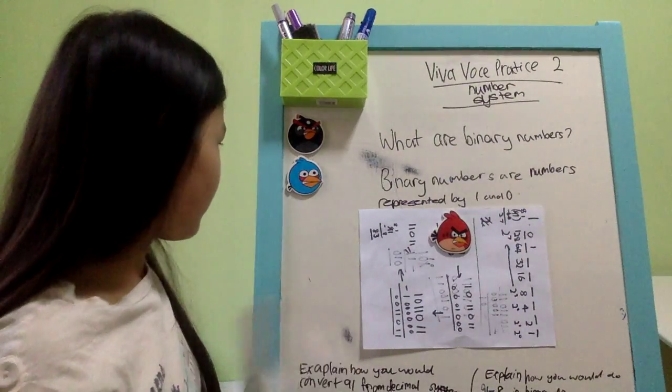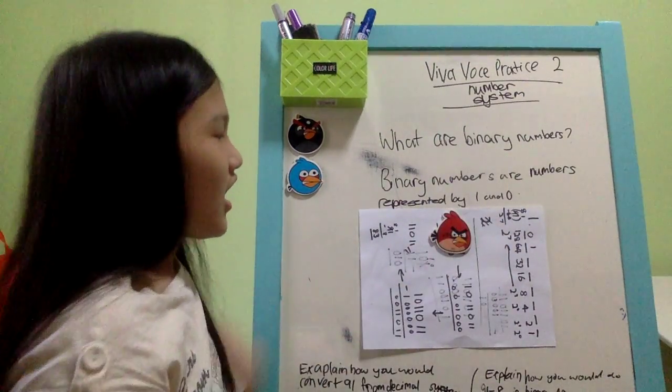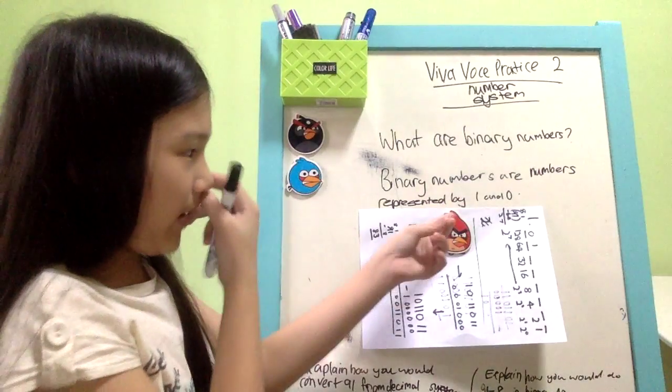So open up the piece. Alright, so binary numbers are numbers represented by 1 and 0.